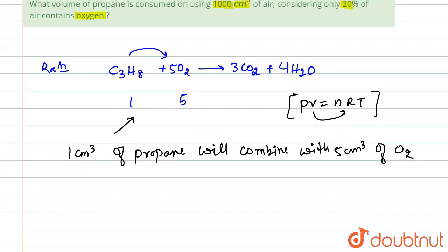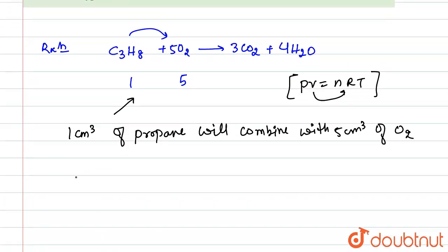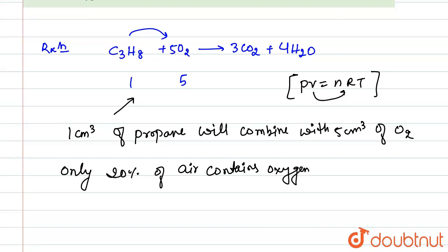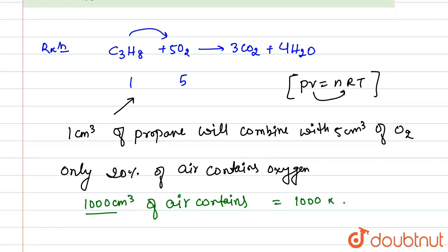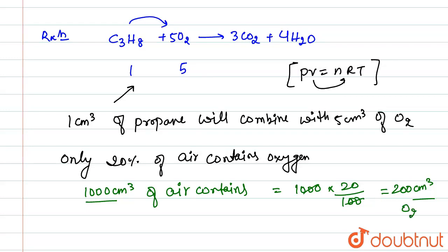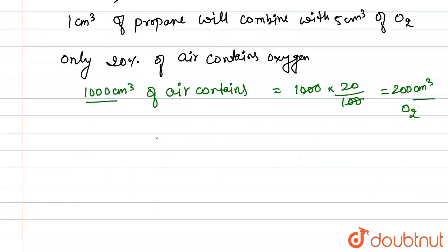The question says that only 20 percent of air contains oxygen. So 1000 centimeter cube of air contains oxygen equal to 1000 multiplied by 20 upon 100, which equals 200 centimeter cube of oxygen.